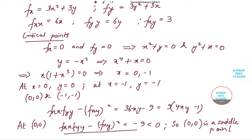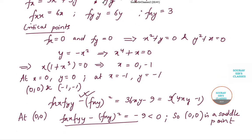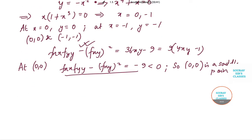Now let us evaluate the value of this at (-1,-1). So let's do it. Now at (-1,-1) we are gonna find out fxx into fyy minus fxy whole square. So the value of this becomes 9 bracket open 4 minus 1 and this is equal to 27. So it is greater than 0.